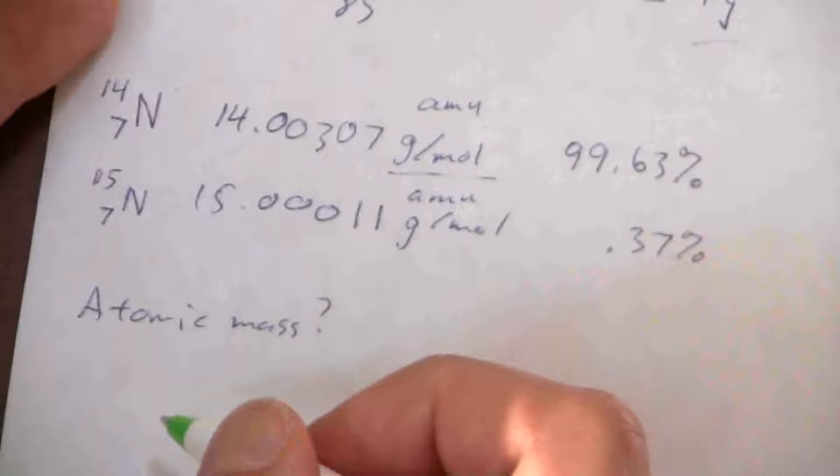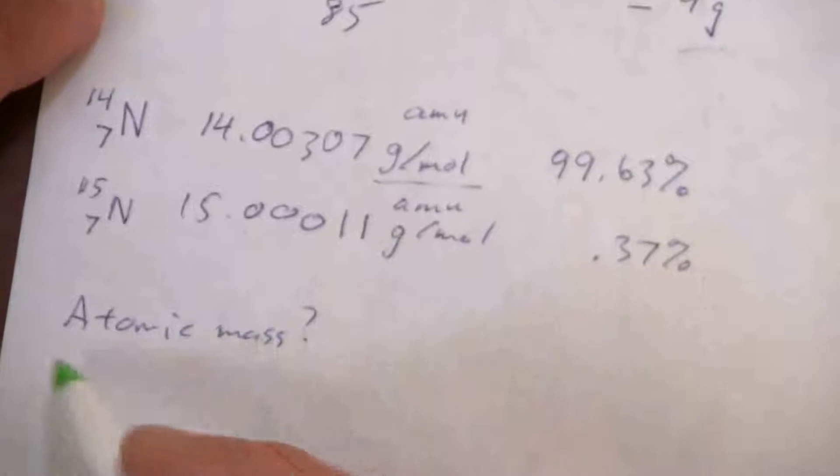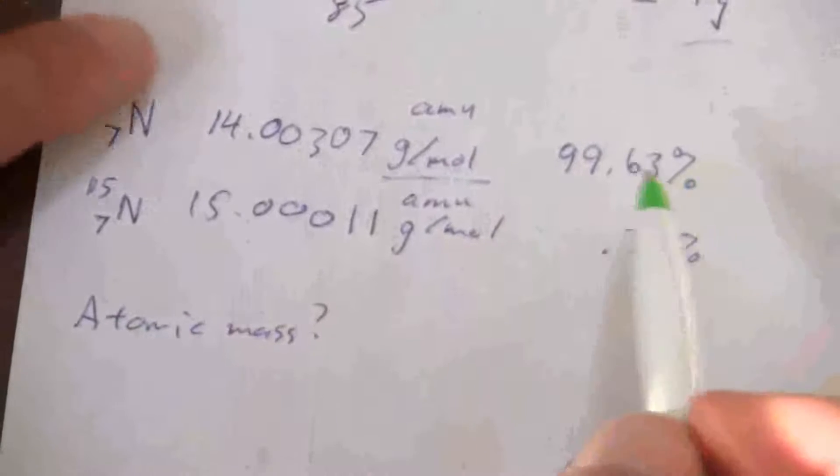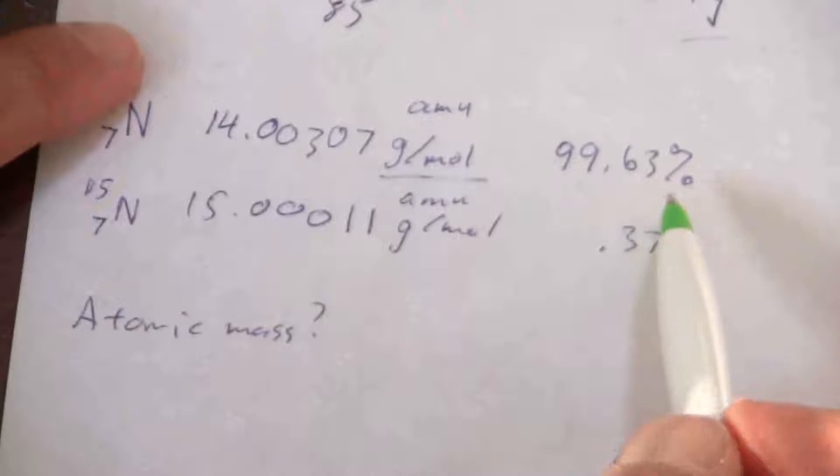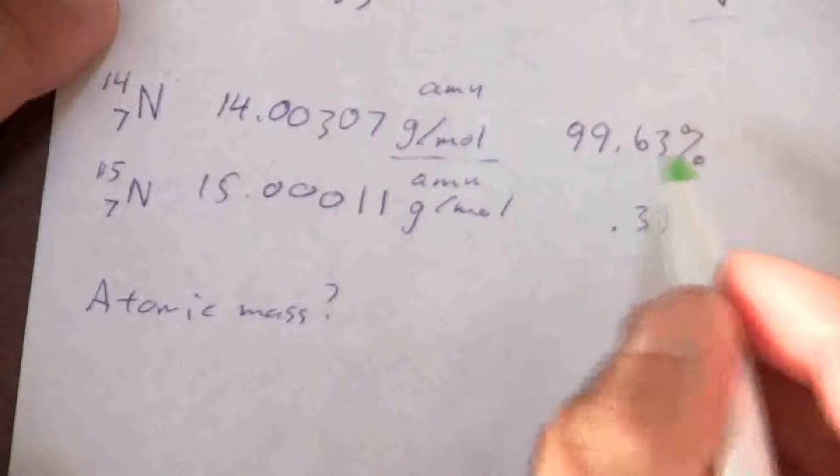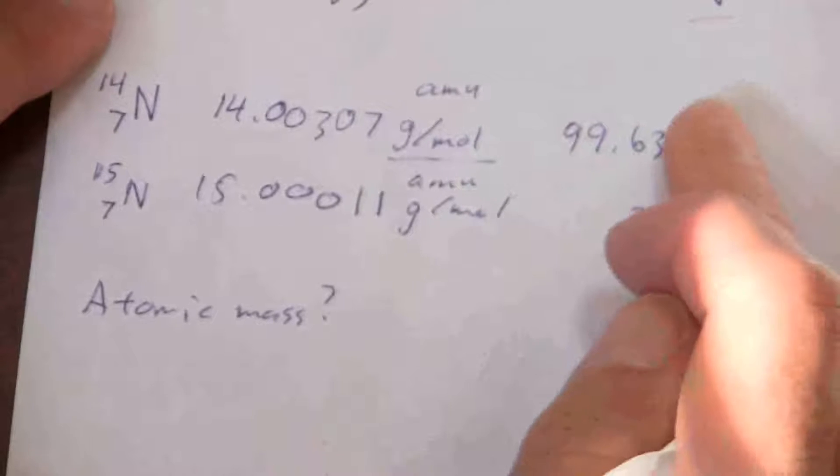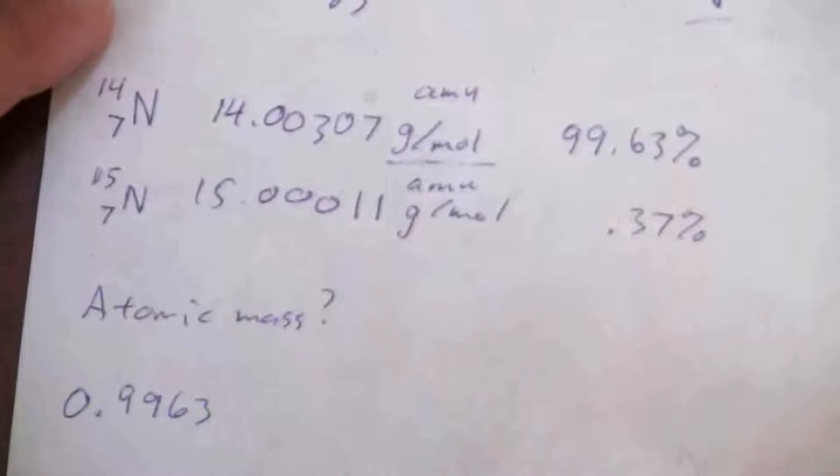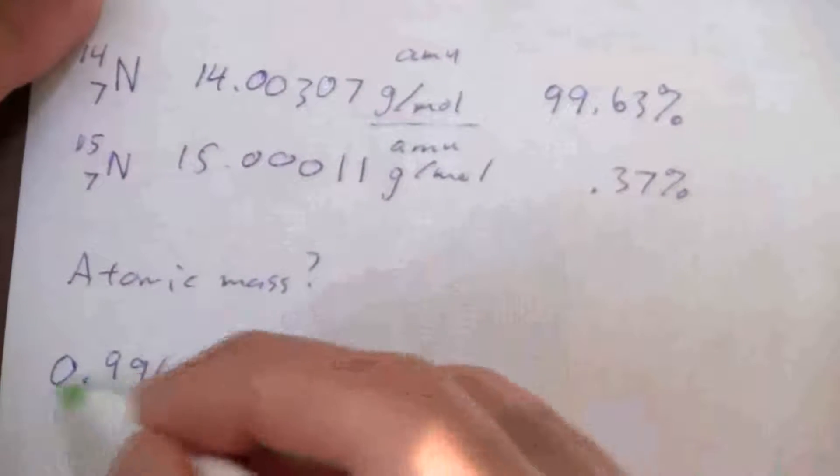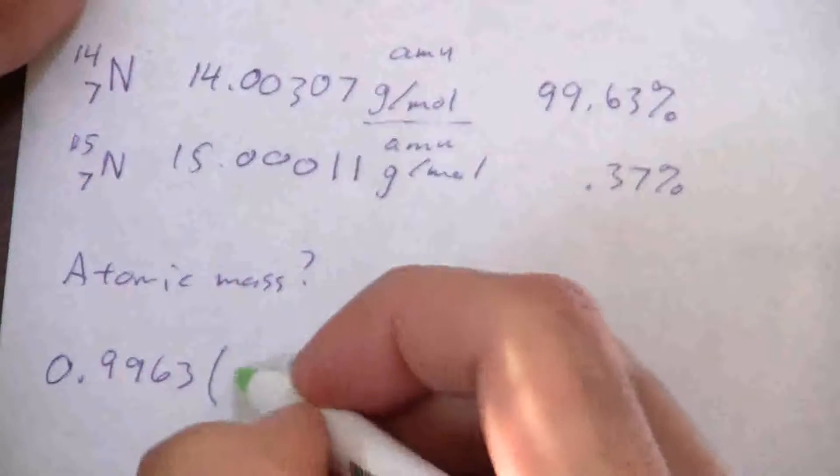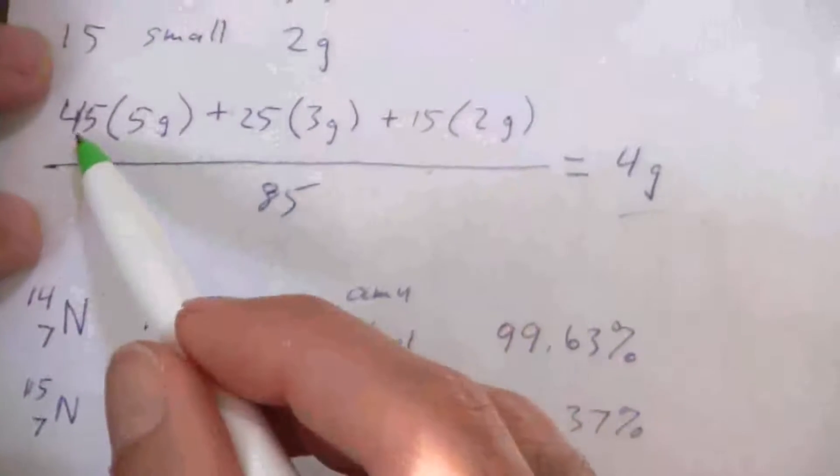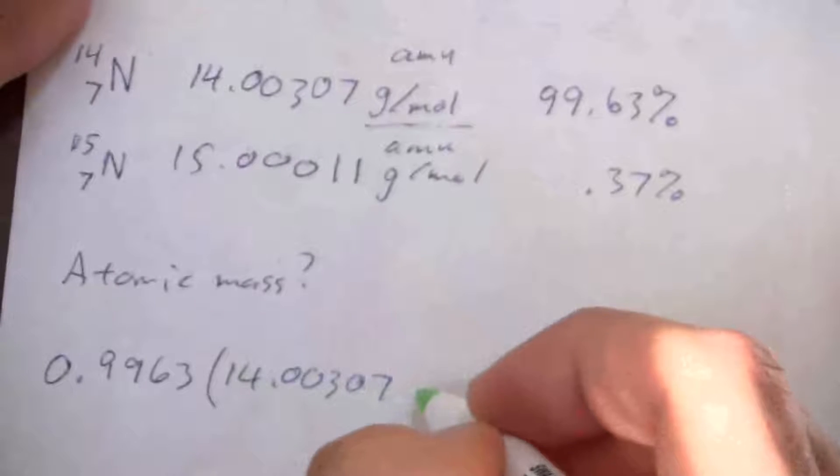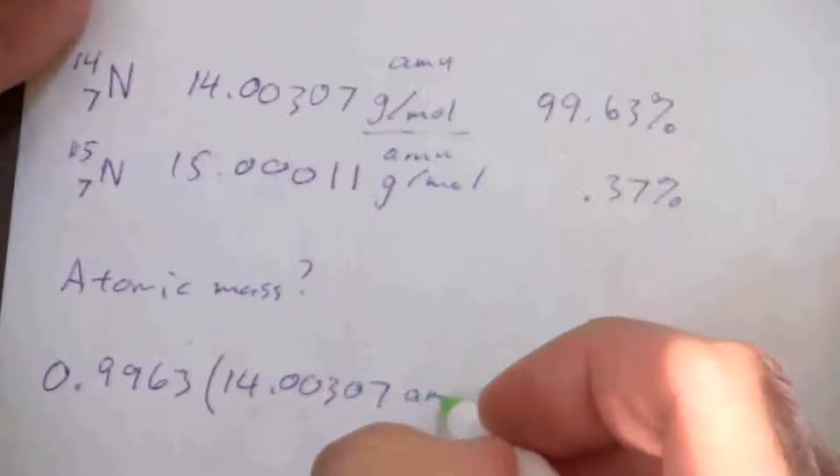So let's find the weighted average, the atomic mass. So here's my weight. But I want to express this as a decimal. It will simplify our calculations. So instead of saying 99 percent, I'm going to say out of one, I just moved the decimal over, 0.9963. So that's my weight for the first one, just like here. And then for the mass, 14.00307, and I'm going to say AMU.